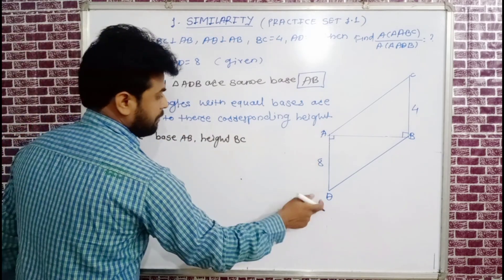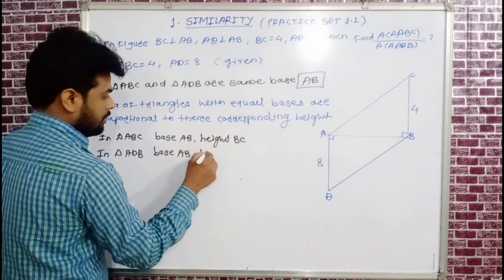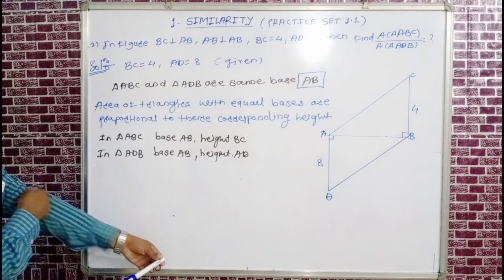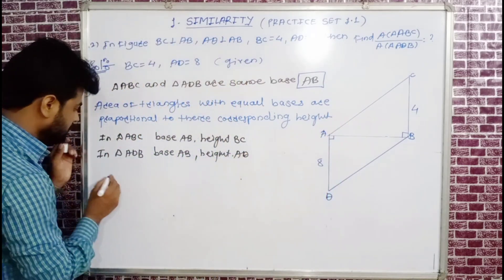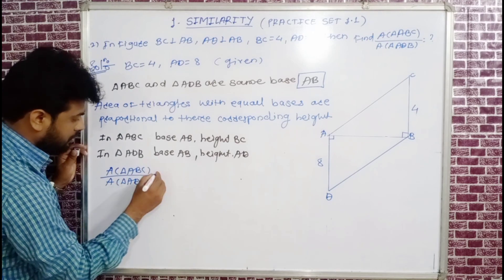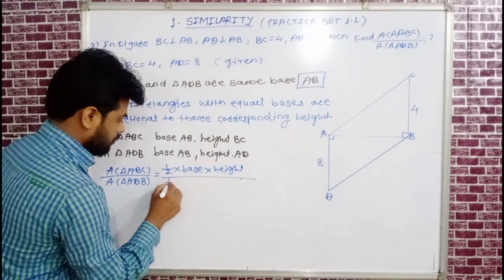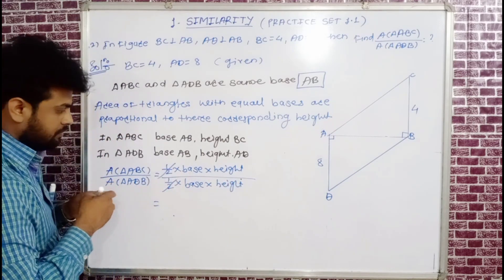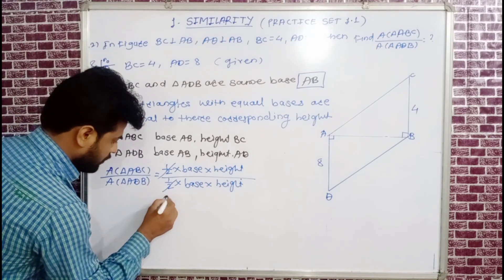In triangle ADB, base is AB (same as before) and height is AD. Using the area formula ½ × base × height for both triangles, the ½ and the common base AB cancel out from numerator and denominator.